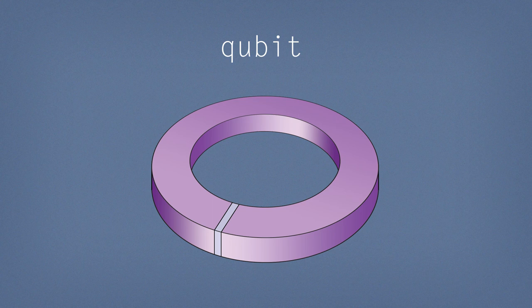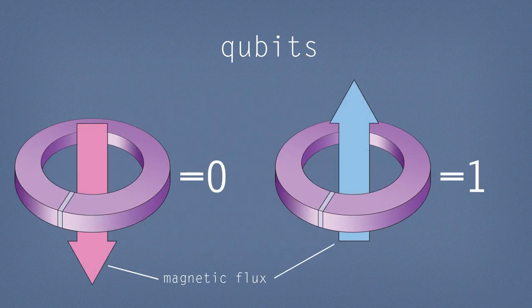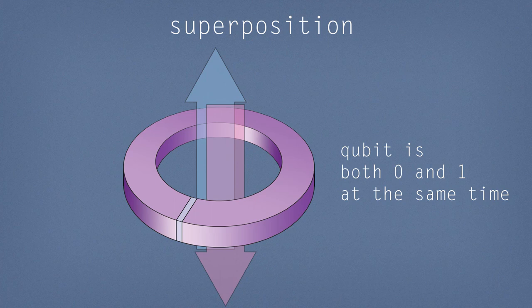So the basic computational element in a quantum processor is a qubit. Now a qubit is a lot like a bit in the sense that it can encode a state as zero or a one but it's a quantum bit, q for quantum bit, and it has the additional properties that can be in a superposition of zero and one at the same time.